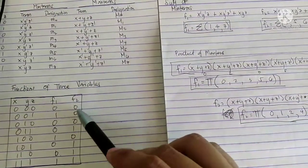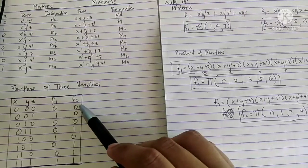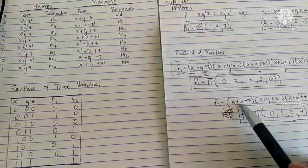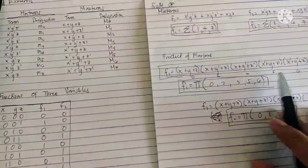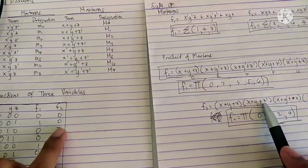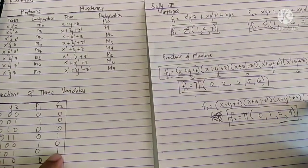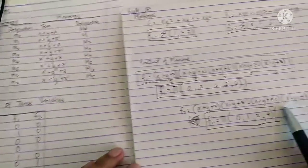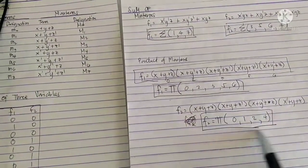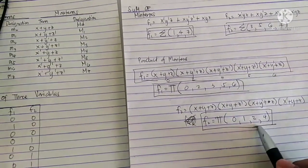For the second function, there are four zeros, designated as M sub 0, M sub 1, M sub 2, and M sub 4. So this will be (x plus y plus z) times (x plus y plus z prime) times (x plus y prime plus z) times (x prime plus y plus z). The product of max terms for the second function corresponds to positions 0, 1, 2, and 4.